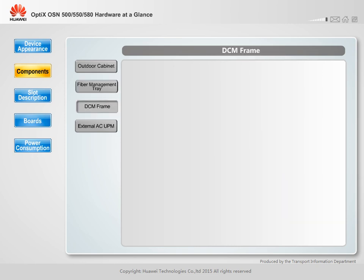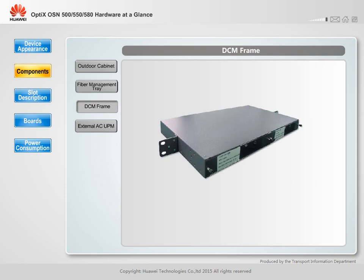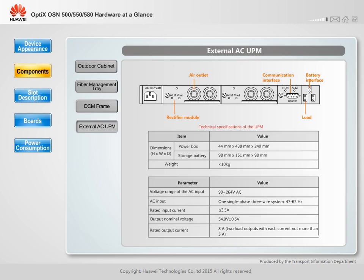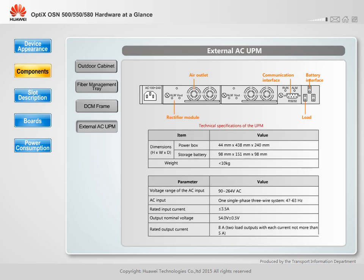A DCM frame is used to house DCMs. The OptiX OSN 580 supports 2 DCM frames, and each DCM frame can house 2 DCMs. The external AC power supply of the UPM converts 110V or 220V AC power into 48V DC power, and supplies it to the OptiX OSN 500 or 550. The UPM's management module is called CAU. You only need to configure the CAU on the NMS.